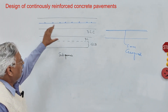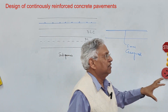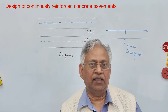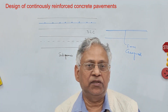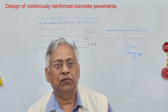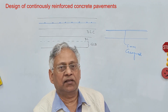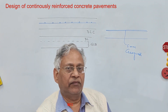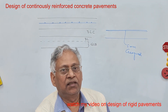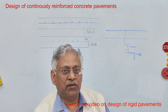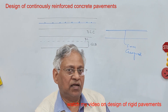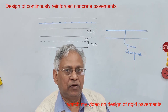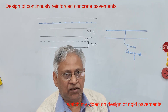After you design the rigid pavement as per IRC 58 — and as mentioned, generally 250 to 300 mm thickness is sufficient for the traffic conditions prevailing in the country — the next step is to provide the reinforcement. If you want to see the design procedure, there is another video on design of rigid pavement you can watch.